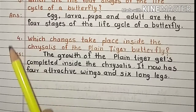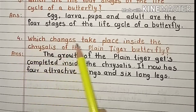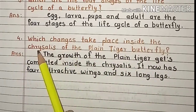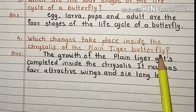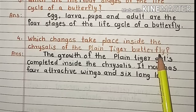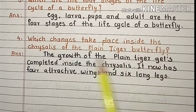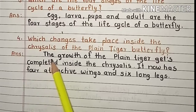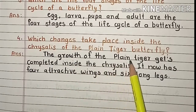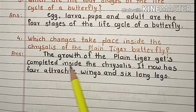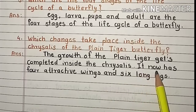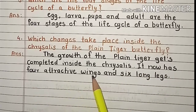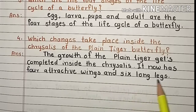Question 4. Which changes take place inside the chrysalis of the plain tiger butterfly? Answer. The growth of the plain tiger gets completed inside the chrysalis. It now has four attractive wings and six long legs.